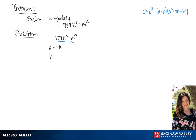Our b term is going to be the cubed root of m to the twelfth power, which is m to the fourth power. Now we're going to plug these into our formula, which is in the top right-hand corner. We will get 9k minus m to the fourth, times 81k squared plus 9km to the fourth plus m to the eighth power.